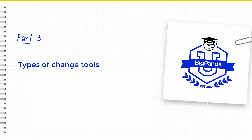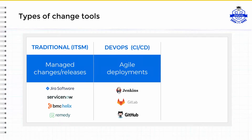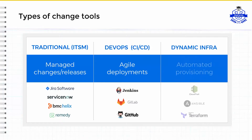Now let's discuss the different types of change tools that you may be using and integrating with BigPanda. Traditional ITSM tools are typically used for managed changes and planned releases — Jira, ServiceNow, and Remedy are all examples. DevOps CI/CD tools like Jenkins, GitHub, and GitLab are used for agile development to help automate the building, testing, and deployment of applications. Dynamic infrastructure tools such as CloudTrail, Ansible, and Terraform are used to automate or track changes to cloud environments. All of these types of tools may be used simultaneously with BigPanda, and their combined data helps provide context to the incident management process and root cause analysis.